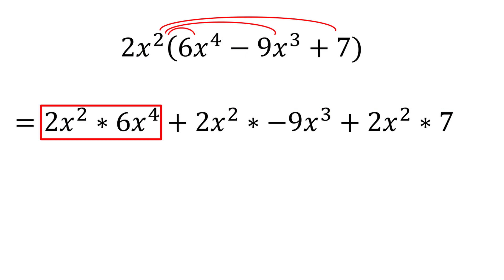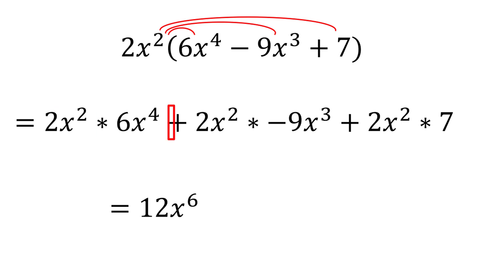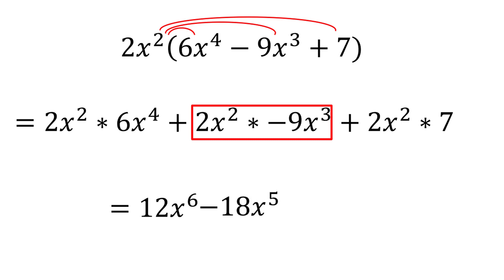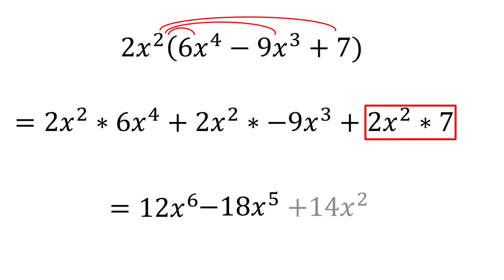2x squared multiplied by 6x to the fourth is 12x to the sixth, as we can multiply 2 and 6 to get 12 and add the exponents on x by the product rule. 2x squared times negative 9x to the third is negative 18x to the fifth. And 2x squared times 7 is 14x squared.